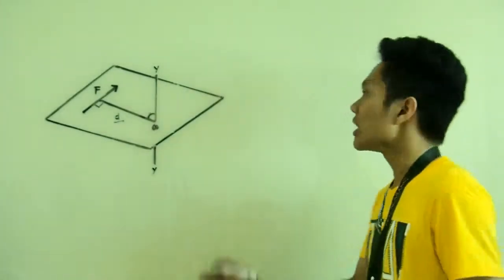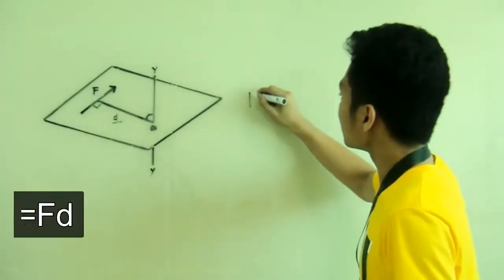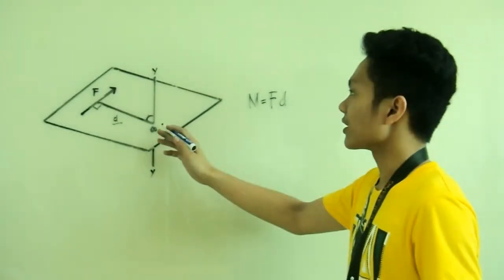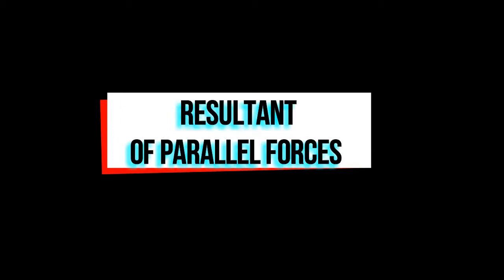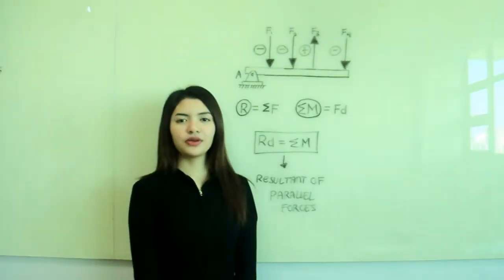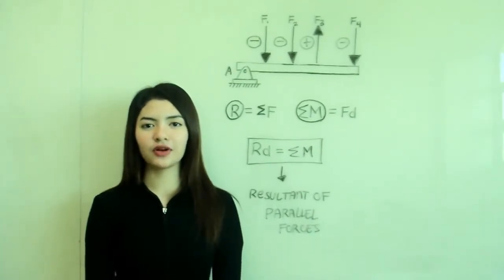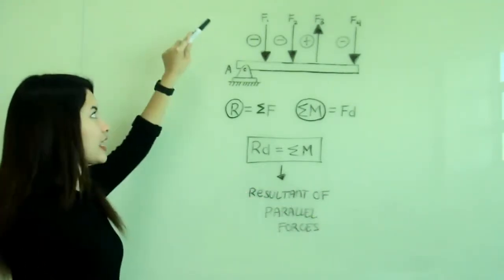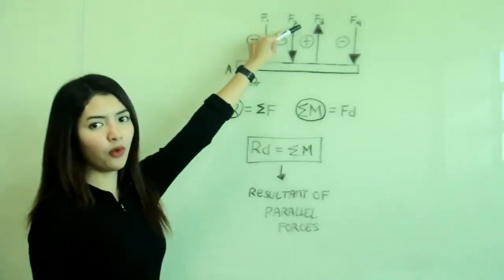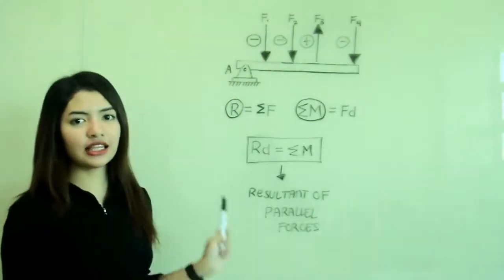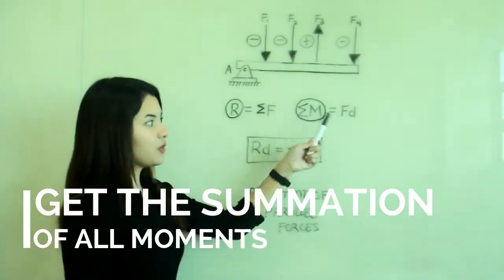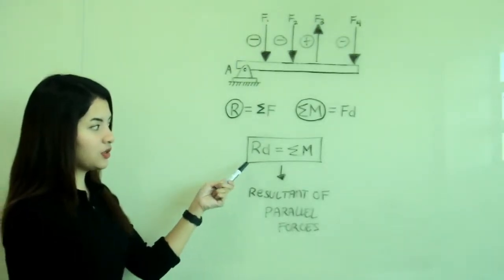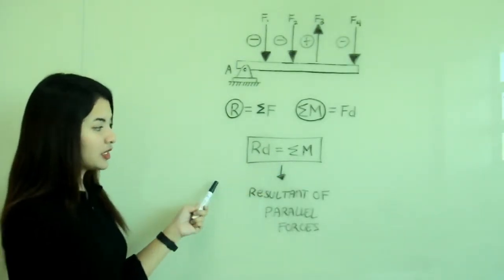This simple illustration shows the moment or the magnitude of the moment where M is equal to the product of the force and the distance perpendicular from the moment center to the line of action of the force. So here is the process of getting the resultant of parallel forces. First, add all the forces to get the resultant. If the force is pointing downward, then it is negative. If the force is pointing upward, it is positive. And the next thing that you will do is to get the summation of moments, which is equal to force times the distance. And the next step is to use this formula, which is Rd is equal to summation of moments. And then you'll be able to get the resultant of parallel forces.